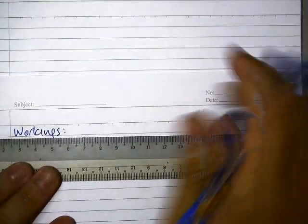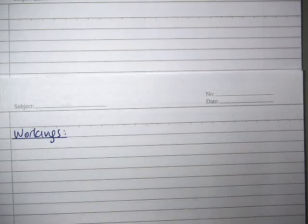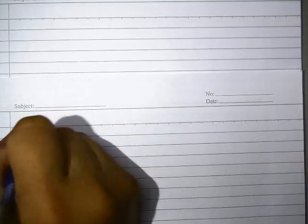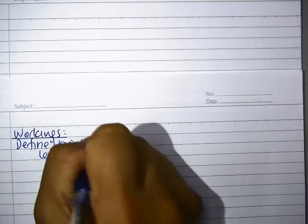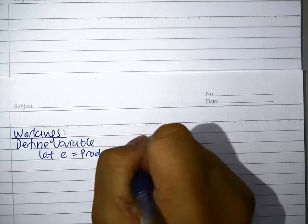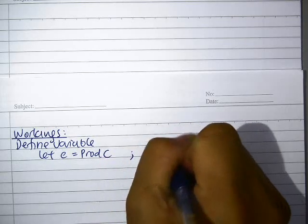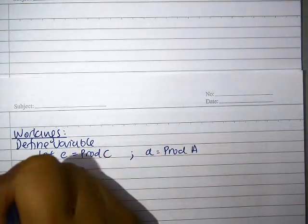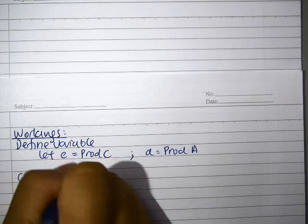To start your linear programming, you're going to define your variables. So let's just define our variable where let C be Product C and let A be Product A. Now let's define our constraints.